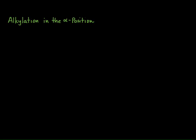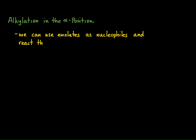This video lecture will be discussing how we can alkylate the alpha position of carbonyl compounds. To do this, we're going to use enolates as nucleophiles and react them with primary or some secondary alkyl halides in an SN2 type substitution.